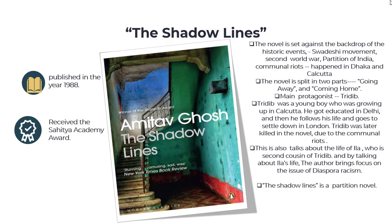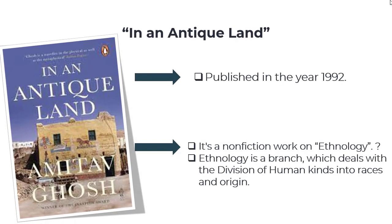The next work is In an Antique Land, published in 1992. It is a non-fictional work of ethnology. Ethnology is a branch that deals with the division of humankind into races and origins — it studies how people are divided on the basis of their ethnic background.